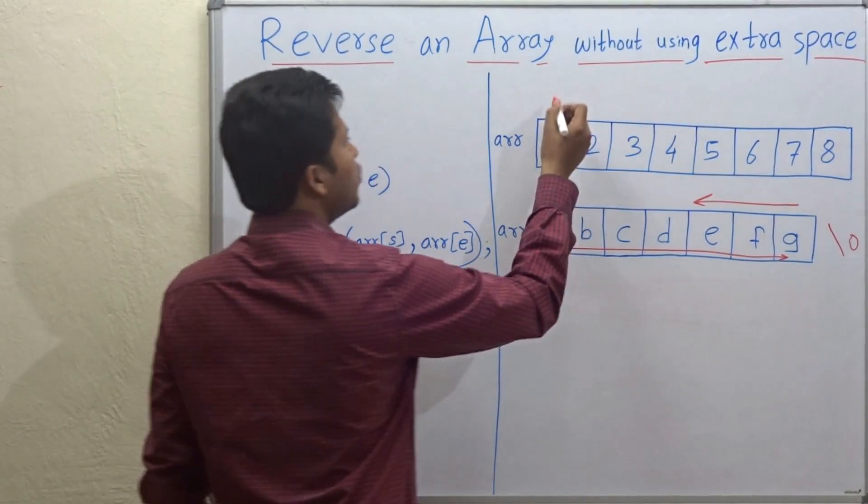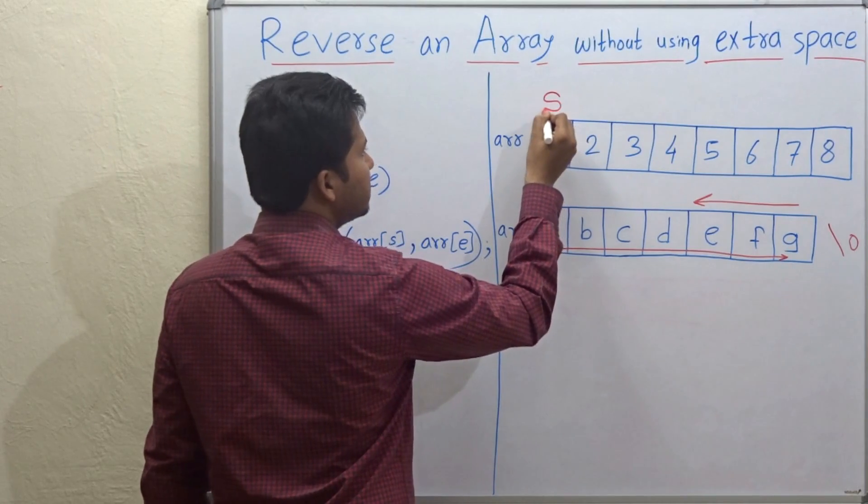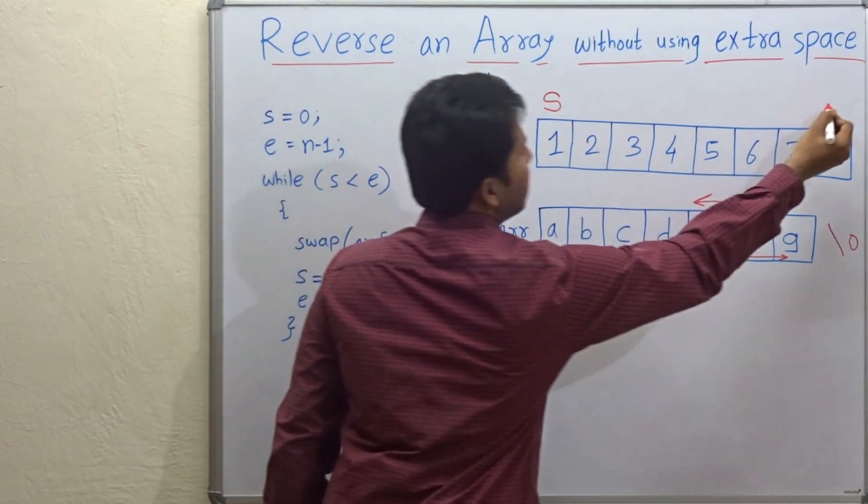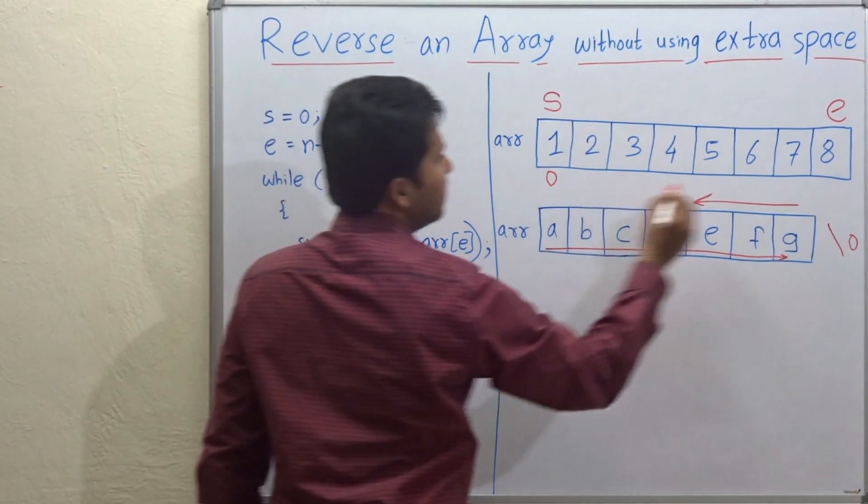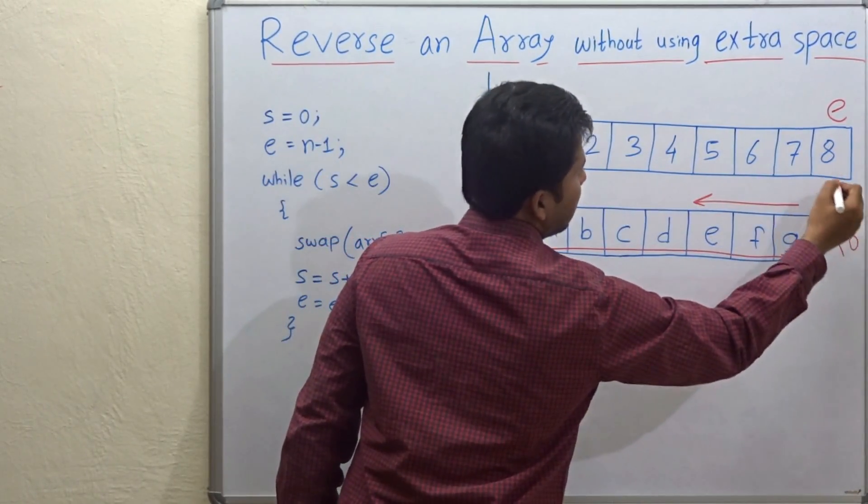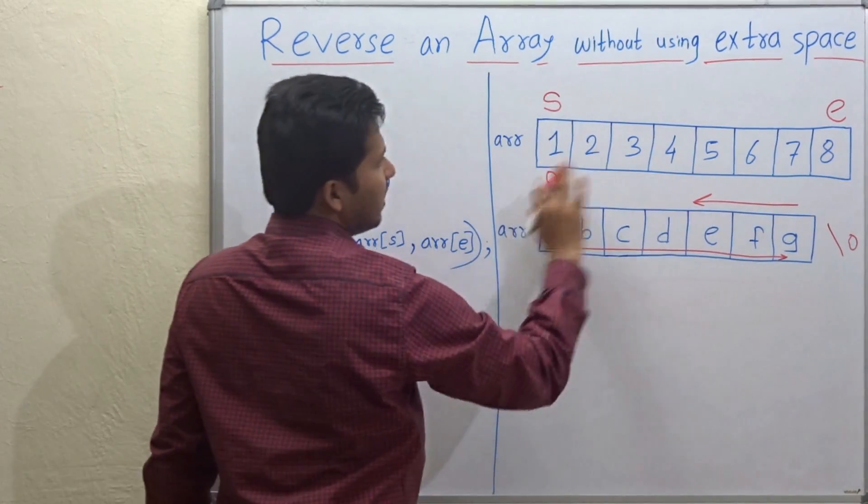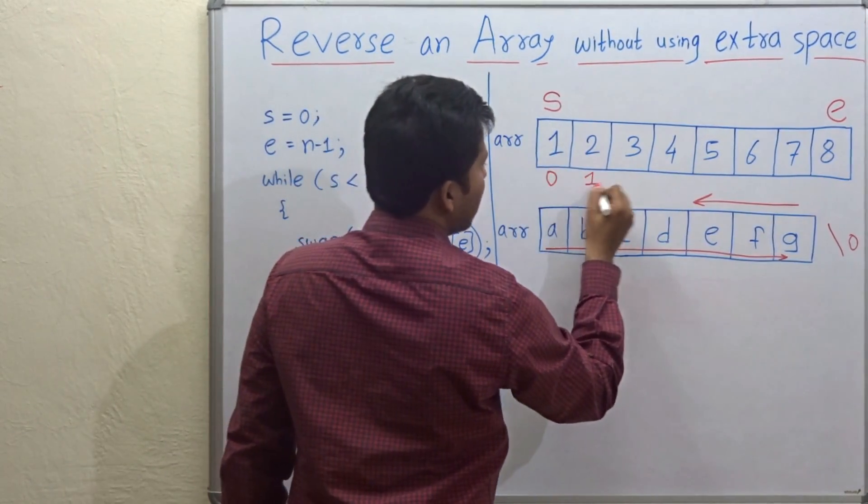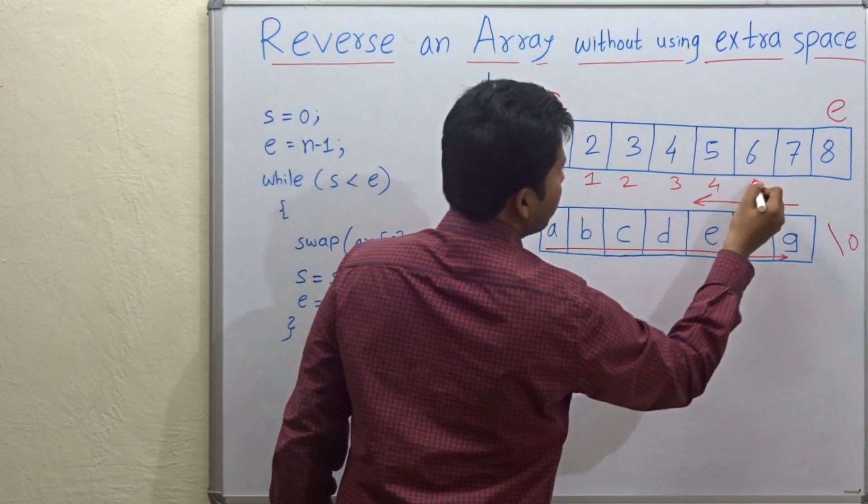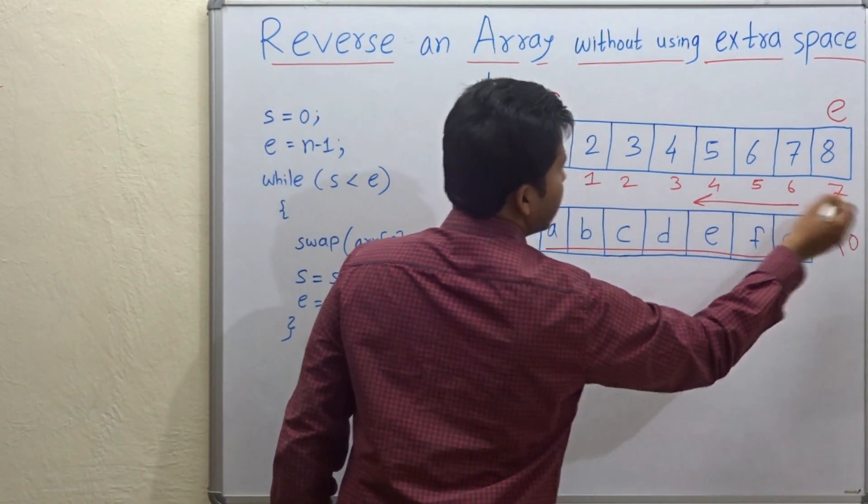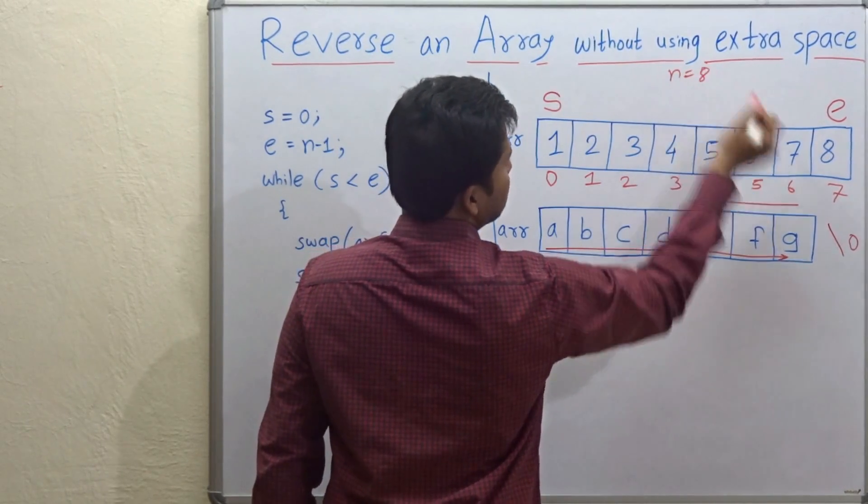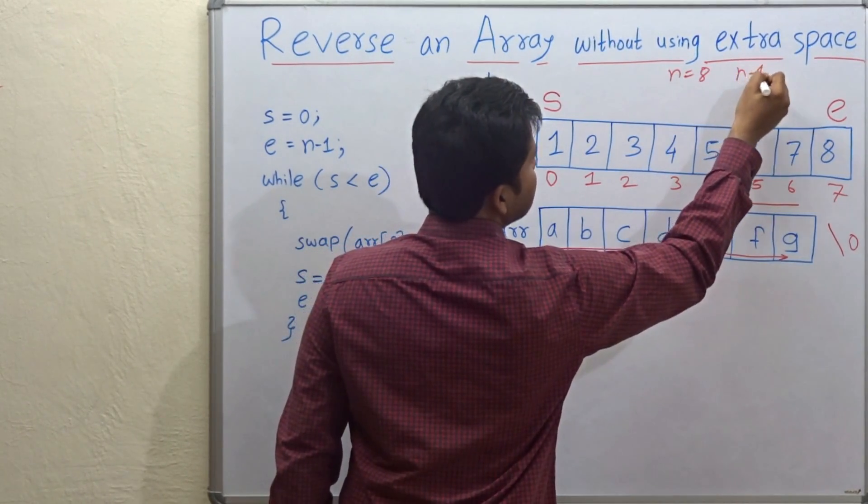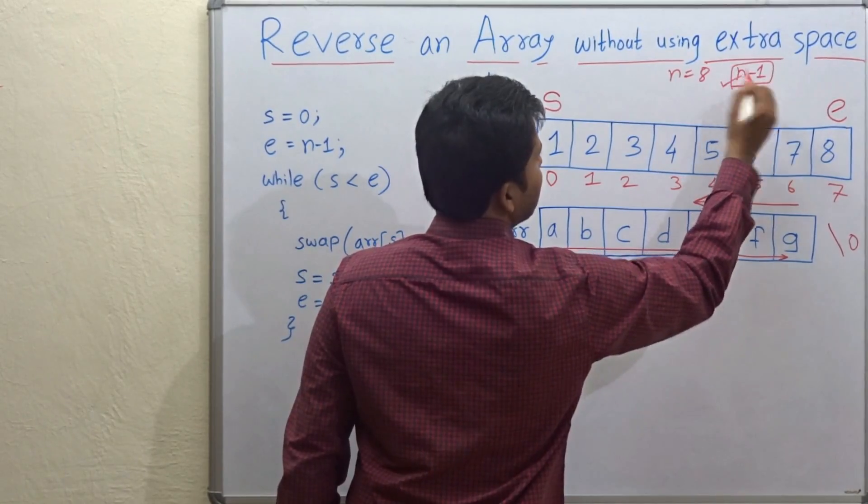You have to take two pointers. The first pointer is S that is start and the second pointer is end. Start will point to the 0th index and end will point to the last index. Here the last index is 0, 1, 2, 3, 4, 5, 6 and 7. The size of the array is n equals 8, so the last index is n minus 1.